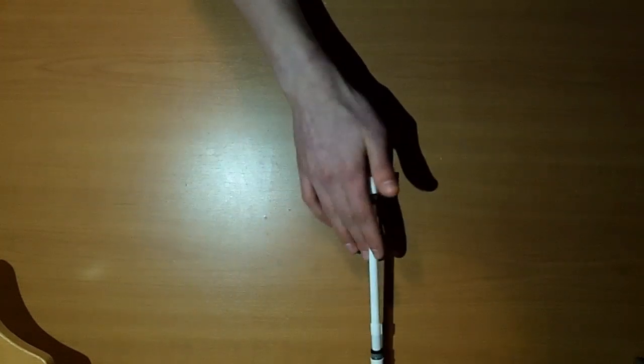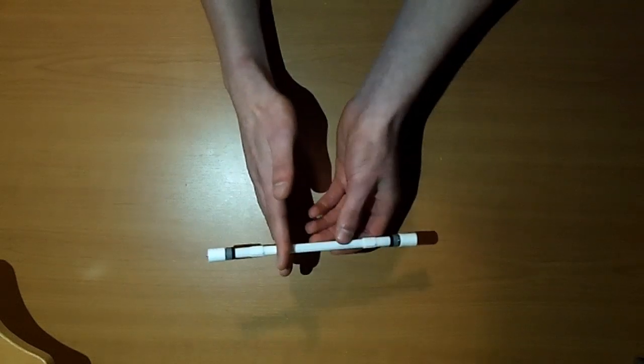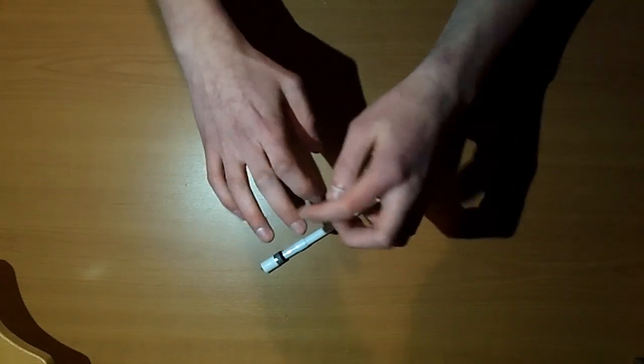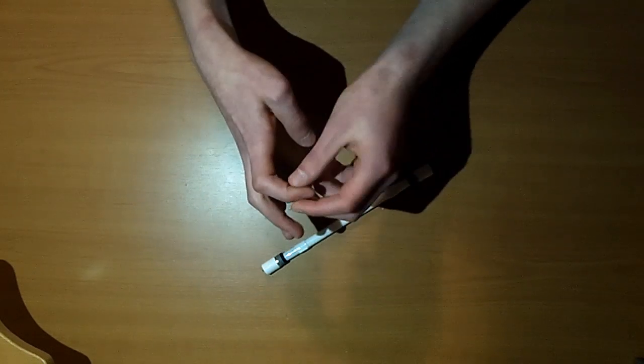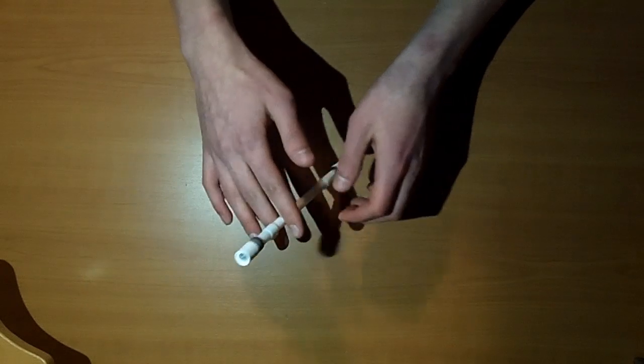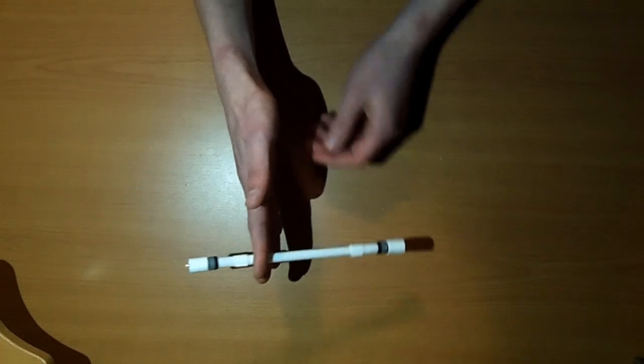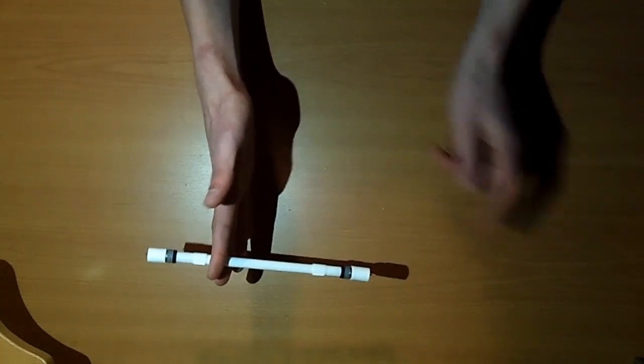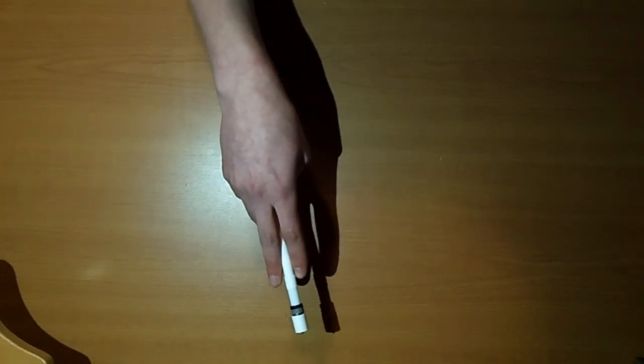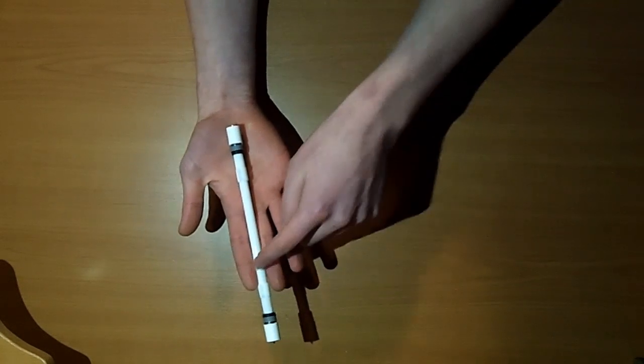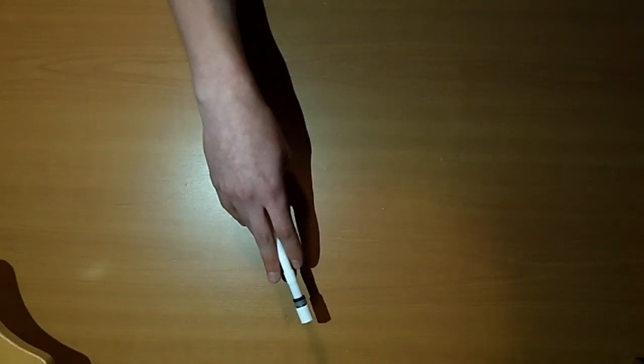Alright, so for the positioning for this trick, you'll want to be grabbing the pen between your two knuckles of your index and middle finger. I usually grab it just right below the cap, but basically you want most of the weight of the pen facing away from your palm. Then just grab it in the palm down position with the pen lying parallel to both of your fingers, like so.